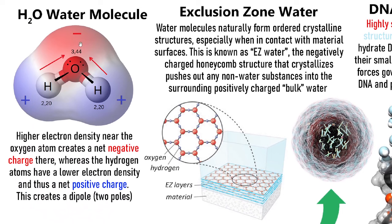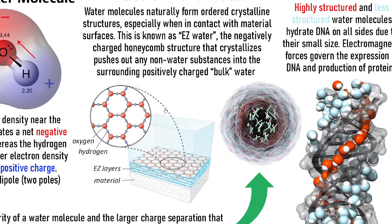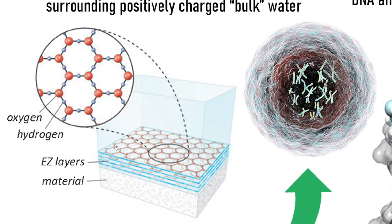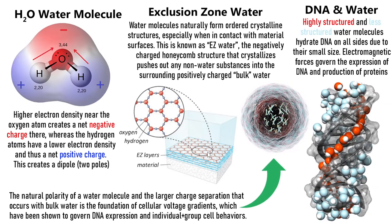Not only does water have a charge differentiation at the molecular level with the hydrogen and oxygen, it also forms this natural charge separation at larger scales, at a collective scale. There are also quantum coherency domains that exist and form that are able to trap energy based on some of these electromagnetic factors.